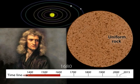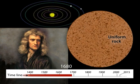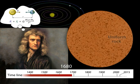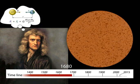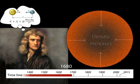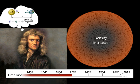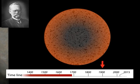Two hundred years later, Sir Isaac Newton, studying our planetary system, calculated that the interior of the Earth must be made of far denser material than the surface rock. Newton's estimate of the overall density of the Earth remains essentially unchanged today.